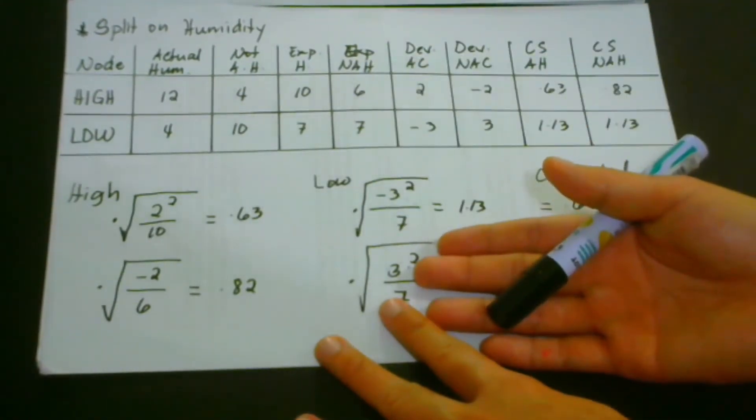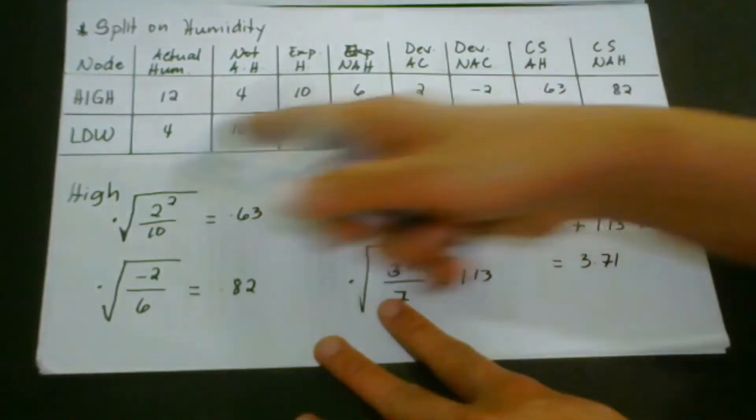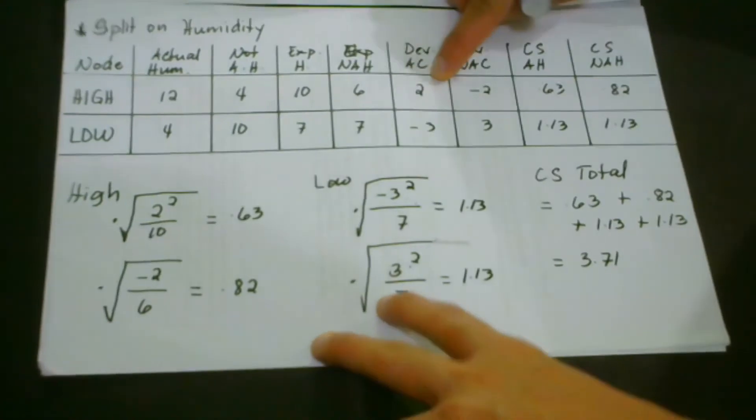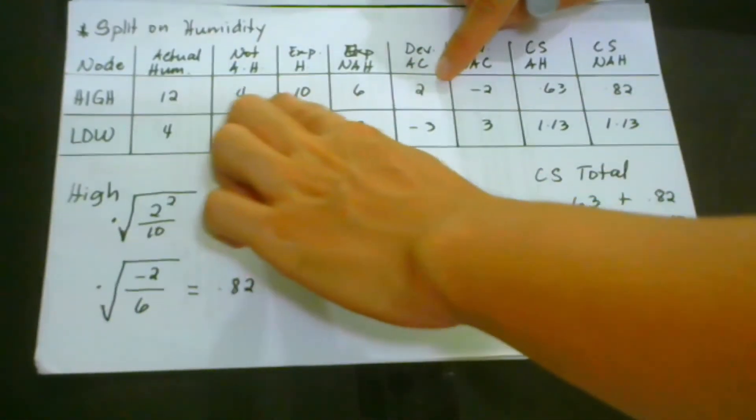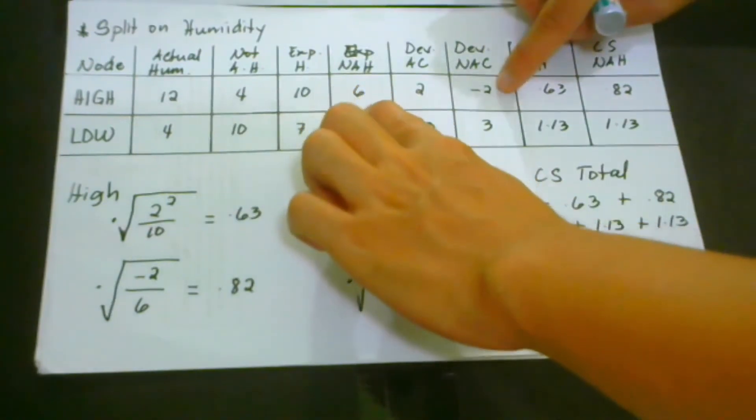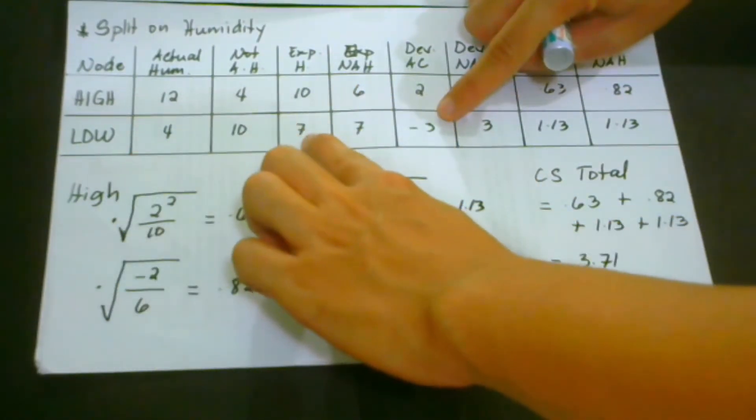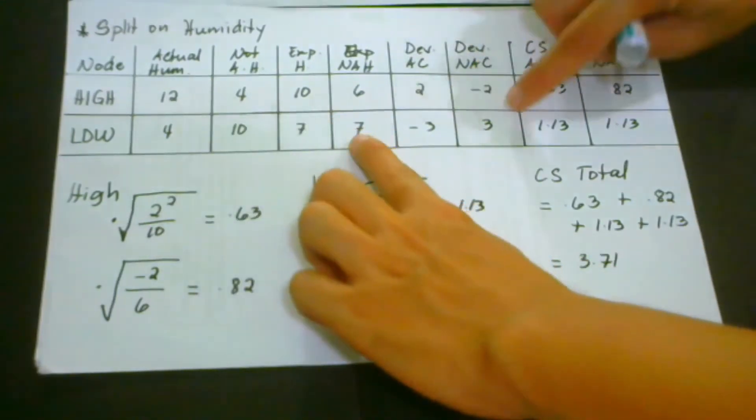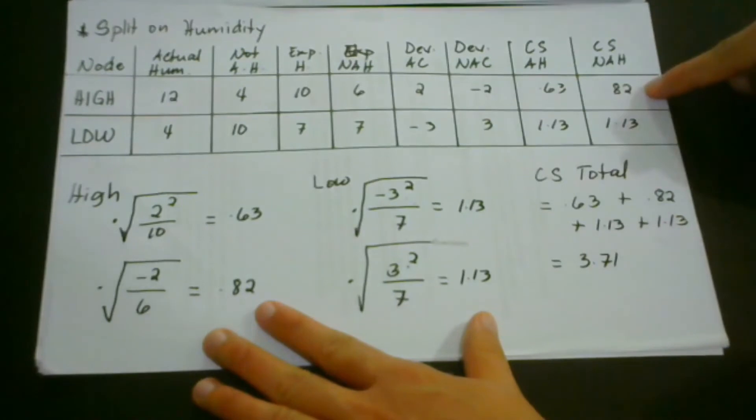And the same process, we do the differences of the actual value minus the expected value. And so we get two here because twelve minus ten is two. Then we have four minus six, that's negative two. Then four minus seven, that becomes negative three. Ten minus seven, we have three. And so we have here the values of the chi-square.